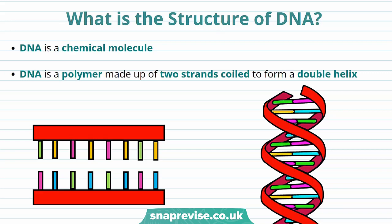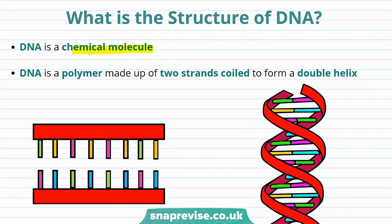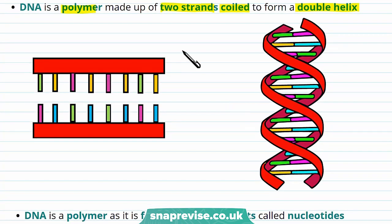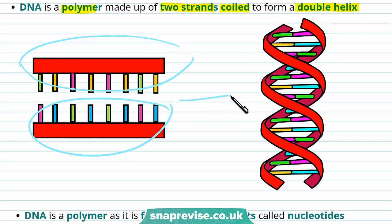But what is the structure of DNA? Well, firstly, DNA is a chemical molecule. DNA is also a polymer and it's made up of two strands coiled to form a double helix. You can see in this diagram that there are two strands of DNA, and these strands twist together to form the double helix shown here.